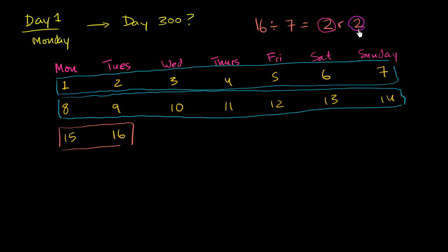Because the remainder tells you—the first 2 just tells you 7 goes into 16 two times, that's how many rows you have before getting to 16. But then the remainder tells you, in that row, where is the 16? The 16 has remainder 2, so it's the second entry in the third row. So it's going to be a Tuesday. Tuesday is the second day.